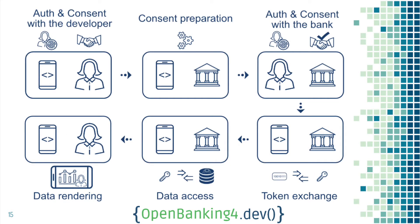It's a six-step process. The first step is between the developer and Alice — you make sure Alice understands that you want to access her data and what kind of data: transactions, balance, etc. The next step is between the bank and the developer, where you prepare the consent and tell the bank what kind of thing you want to access.